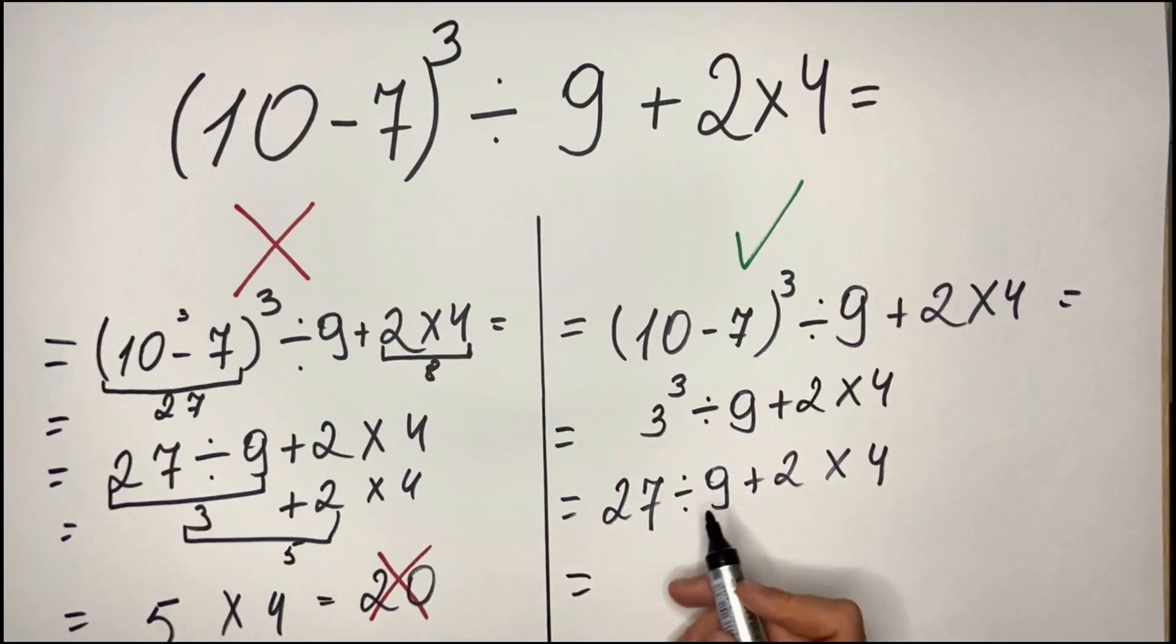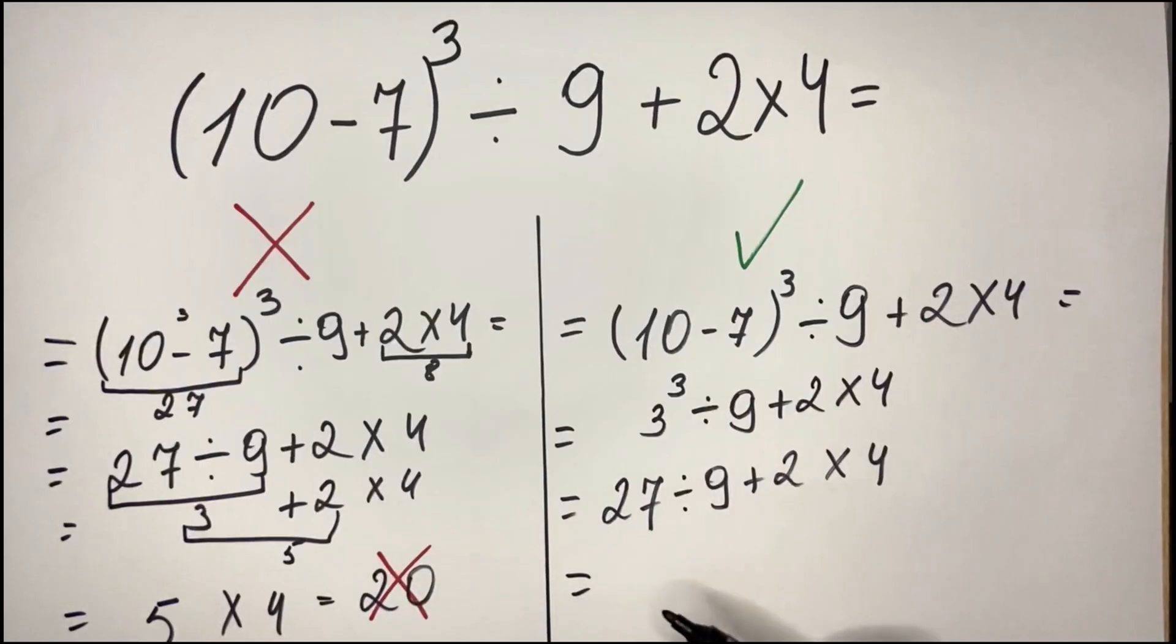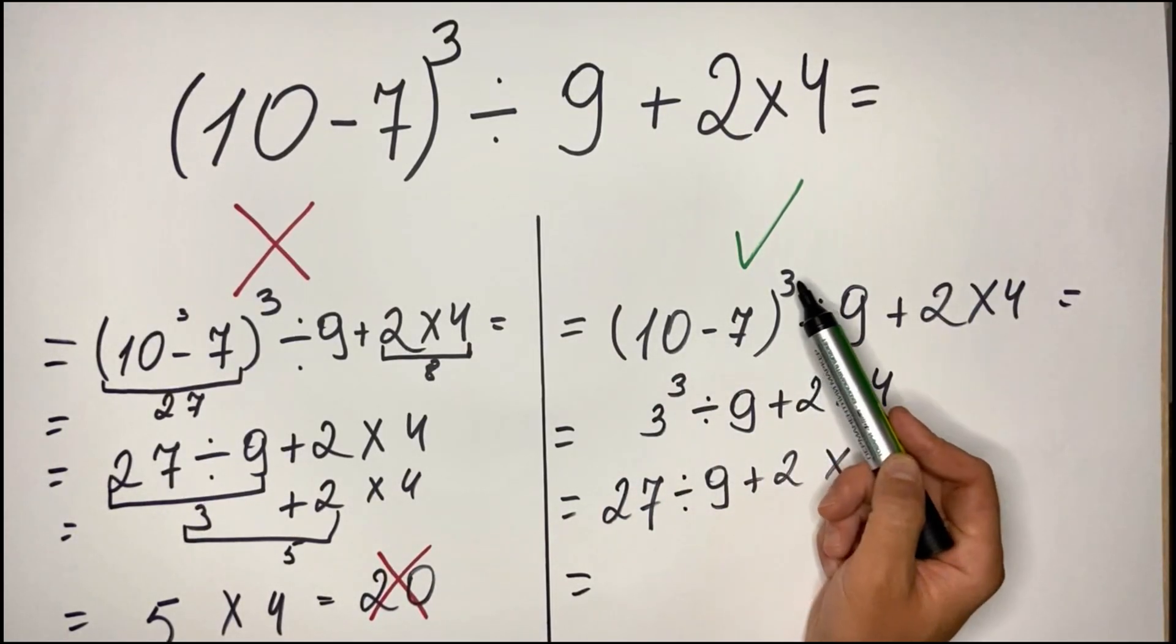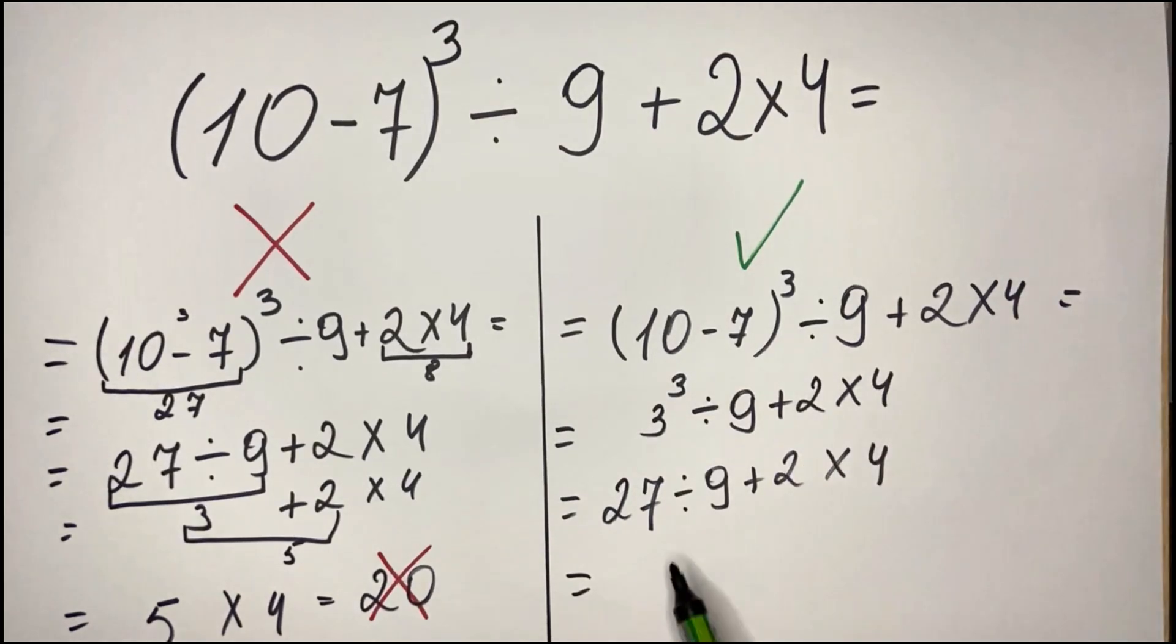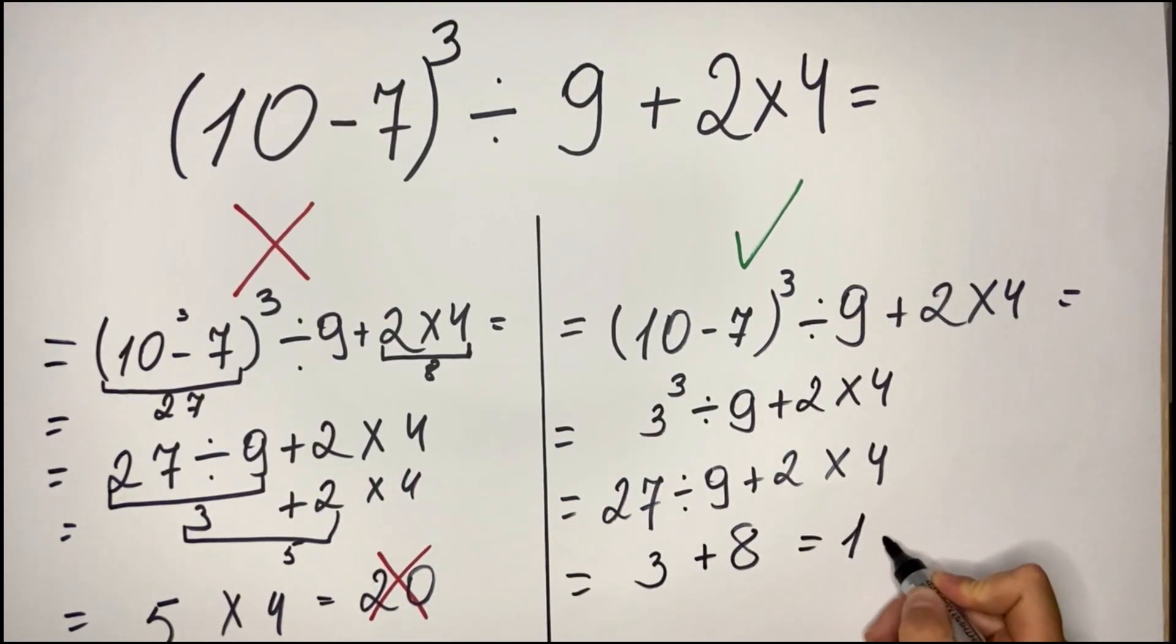We have a division, a multiplication, and an addition. So of course, as we saw after the parenthesis and after the exponent, the next order of operation goes to division and multiplication from left to right. 27 divided by 9, we have 3. 2 multiplied by 4 is 8, so we have 3 plus 8 and the result is 11.